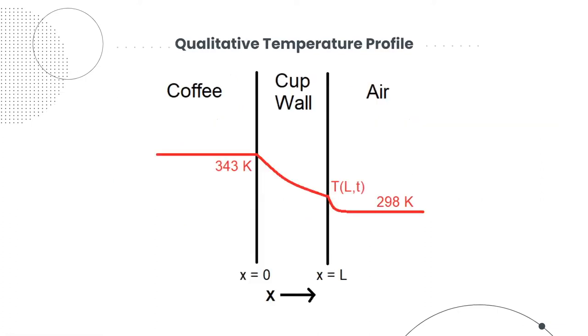Qualitative temperature profiles were estimated. As there is convection between the wall and the air, there would be convection over there, and between the cup wall, there would be conduction.